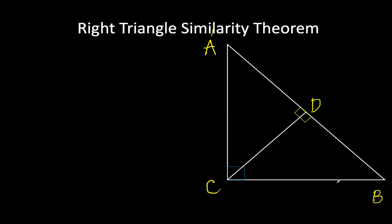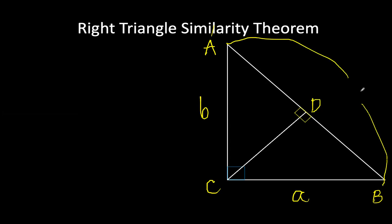The side opposite angle A is equal to A, and the side opposite vertex angle B is equal to B. The hypotenuse is equal to C. Since the hypotenuse is divided into two parts by point D, we say AD equals M and BD equals N. The altitude CD is denoted as X — the segment perpendicular to the hypotenuse from the right angle vertex C, which is 90 degrees.